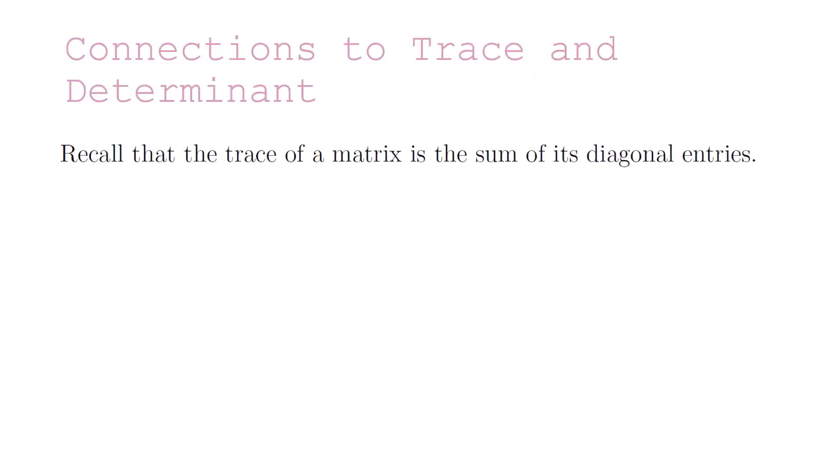Recall that the trace of a matrix is the sum of its diagonal entries. So the trace of A equals A plus D, and the determinant of A equals A·D minus B·C. So P of lambda equals lambda squared minus the trace of A times lambda plus the determinant of A.